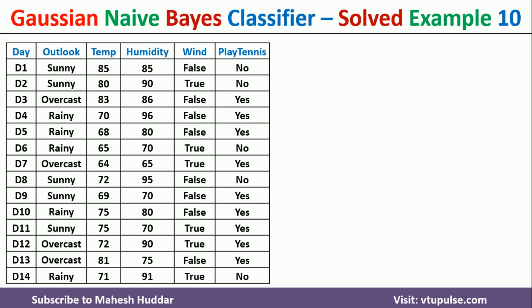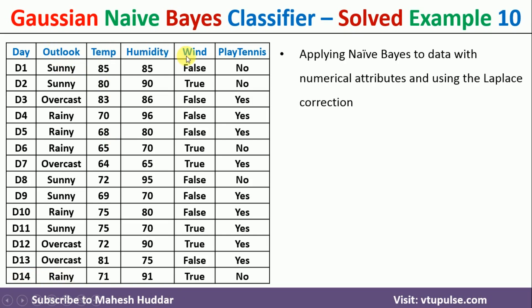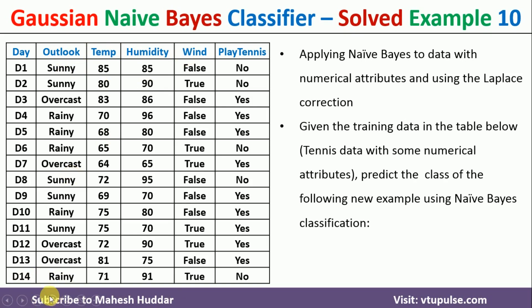In this example, we have been given a dataset with 14 instances and 4 attributes: outlook, temperature, humidity, and wind. Play tennis is the target variable. Out of these 4 attributes, outlook and wind are discrete valued attributes because they have a discrete number of possibilities. But temperature and humidity are continuous valued attributes because we have continuous values for these particular attributes.